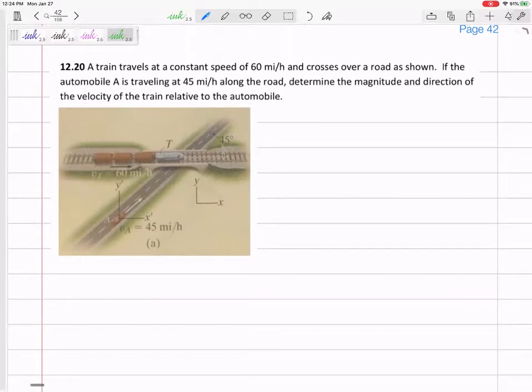It crosses under a road as shown. Automobile A is traveling at 45 miles per hour, and it looks like the road is at 45 degrees as well. Determine the magnitude and direction of the velocity of the train relative to the automobile.